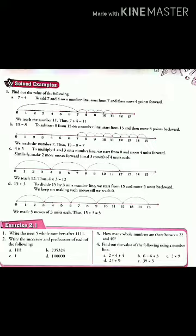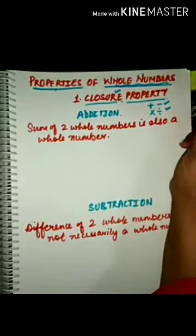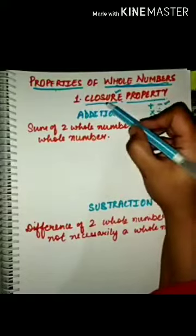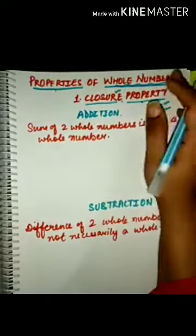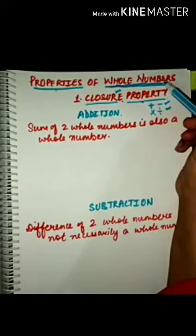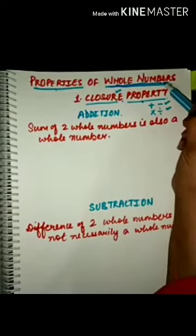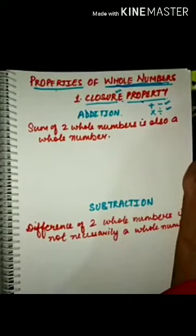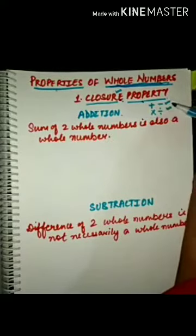Today we will study about different properties of whole numbers — how different properties are applied to different mathematical operations on whole numbers. We are going to discuss the properties of whole numbers in detail, one by one. The first one is closure property. Closure property is satisfied whenever a particular mathematical operation is applied to any two or more whole numbers and the result is also a whole number. We will check closure property for addition, subtraction, multiplication, and division.